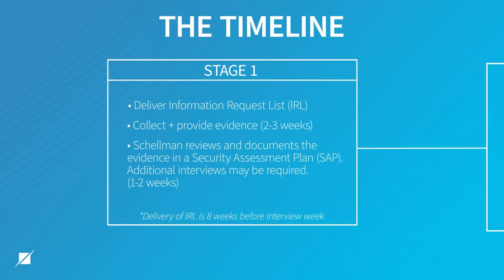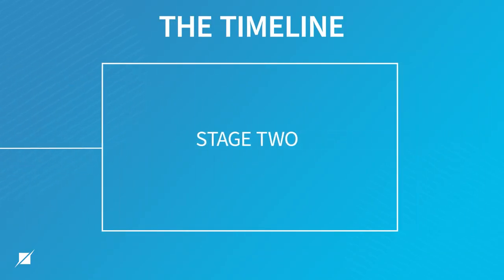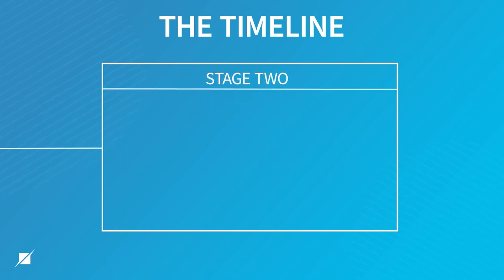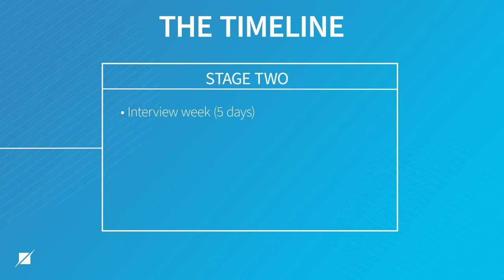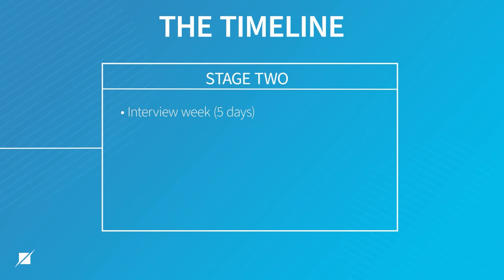Once we start the stage two process, you have the IRL and you'll submit evidence requests to us. We will then have the interview week, which really sets up the remainder of stage two — the bulk of our testing. We will interview your subject matter experts to understand how controls are actually implemented, ensuring there's consistency among your documentation, what we're hearing in interviews, and what we're seeing in the evidence provided. We have one week of interviews, traditionally about four days, and we use that extra day to do some cleanup.